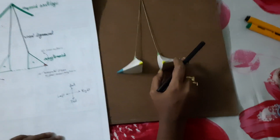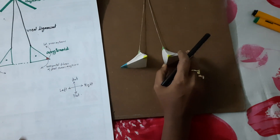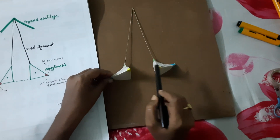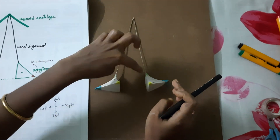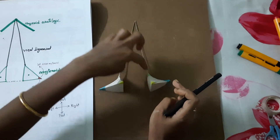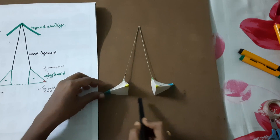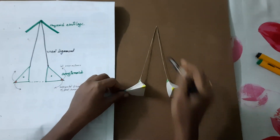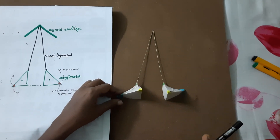Looking at this portion, these two are the arytenoid cartilages and this represents the vocal ligament. This is the position of the thyroid cartilage and this is the position of the inter-arytenoid fold. As you can see, the shape is pentagonal.